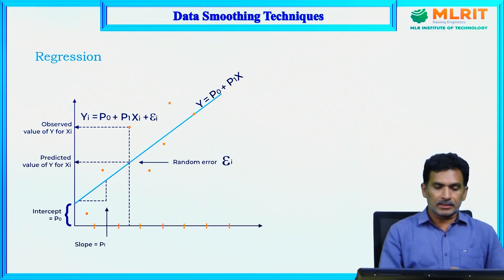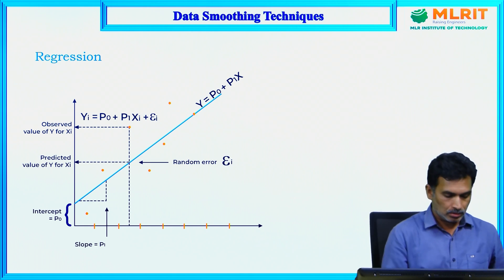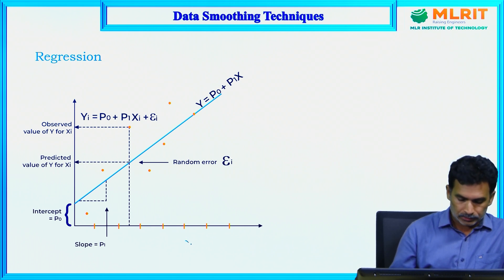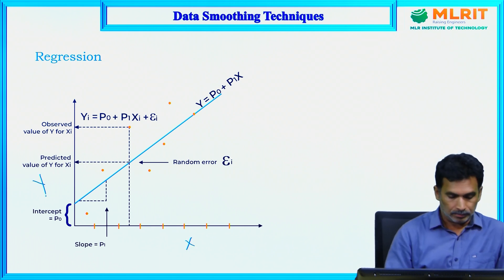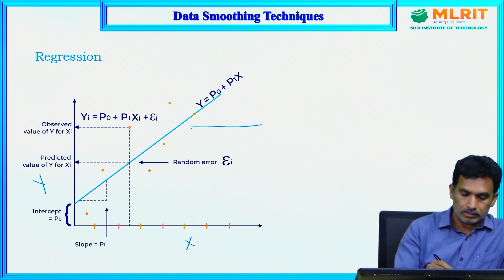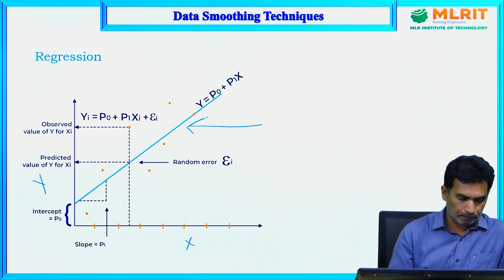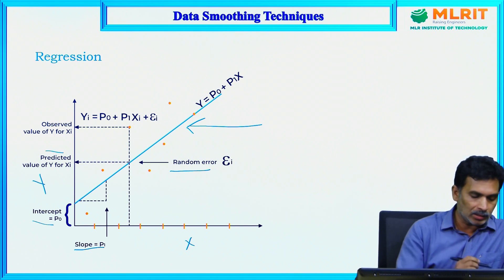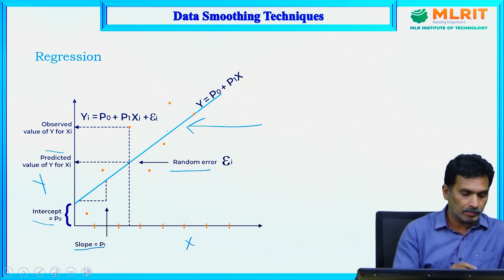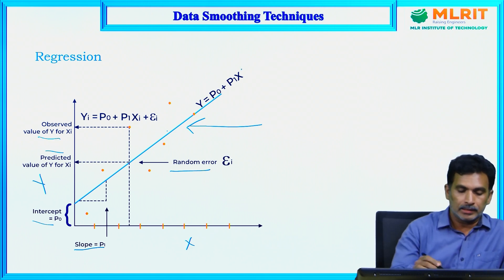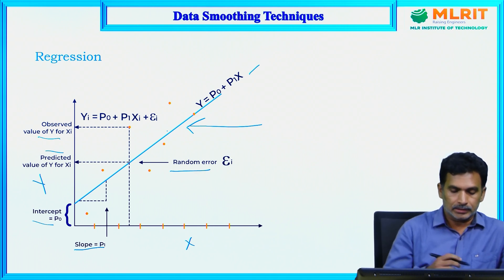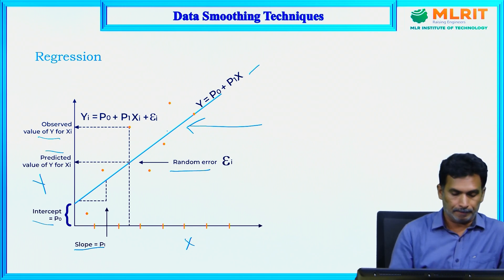Data smoothing can also be done with the help of regression. From this graph, you can see two attributes x and y, and a line depicting the correlation between them. There are terms like random error, slope, intercept, predicted value of y for xi, and observed value of y for xi in the regression equation. This function describes the correlation between attributes x and y, and by using regression we can perform smoothing.